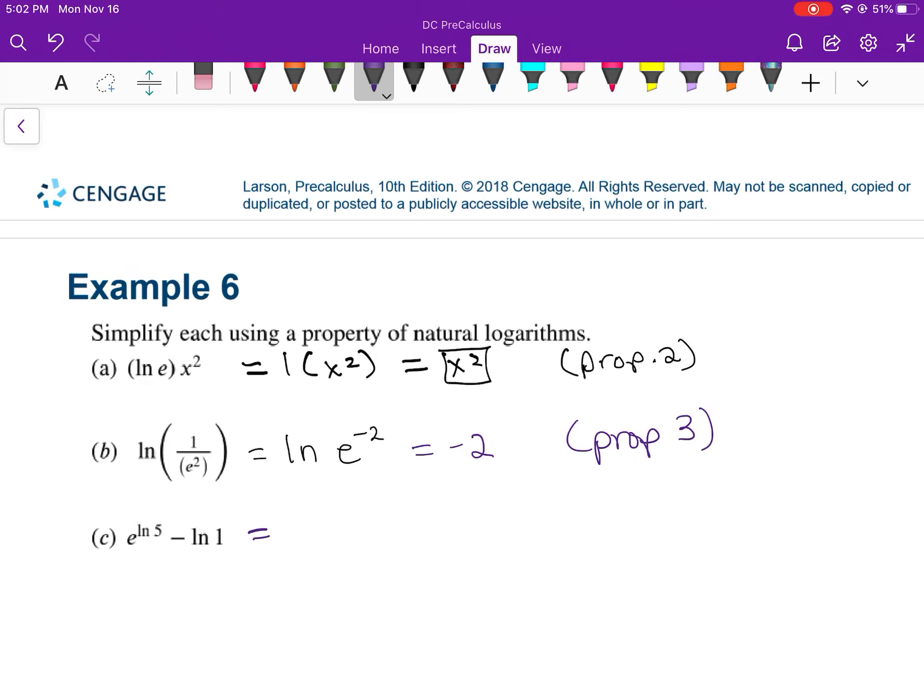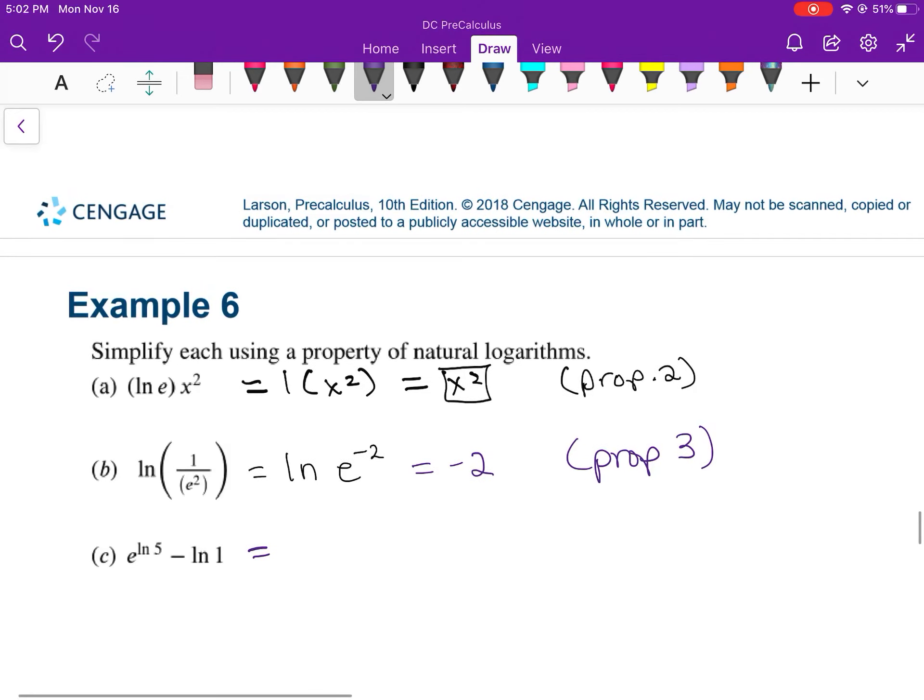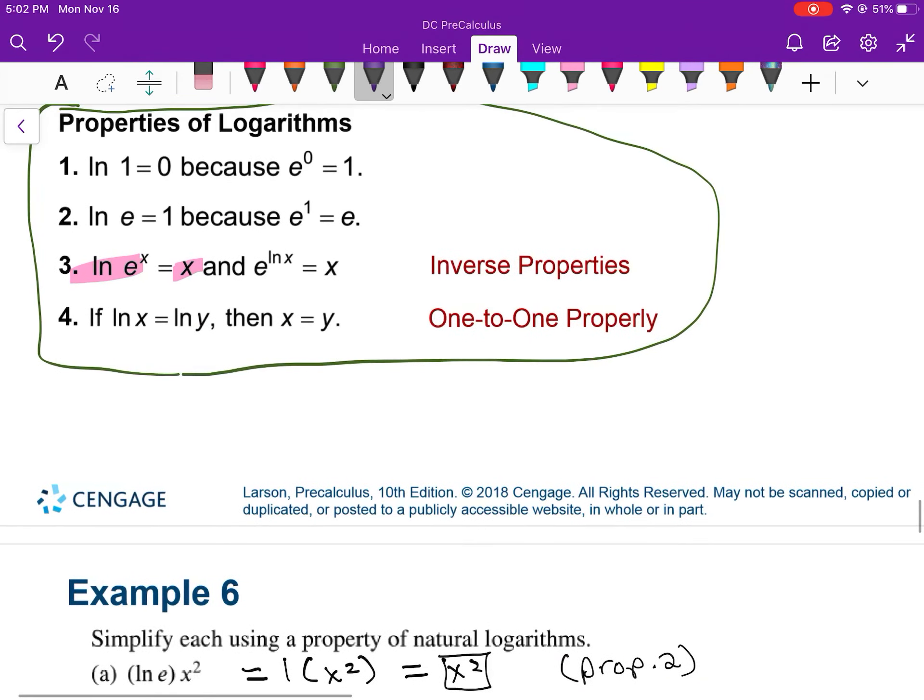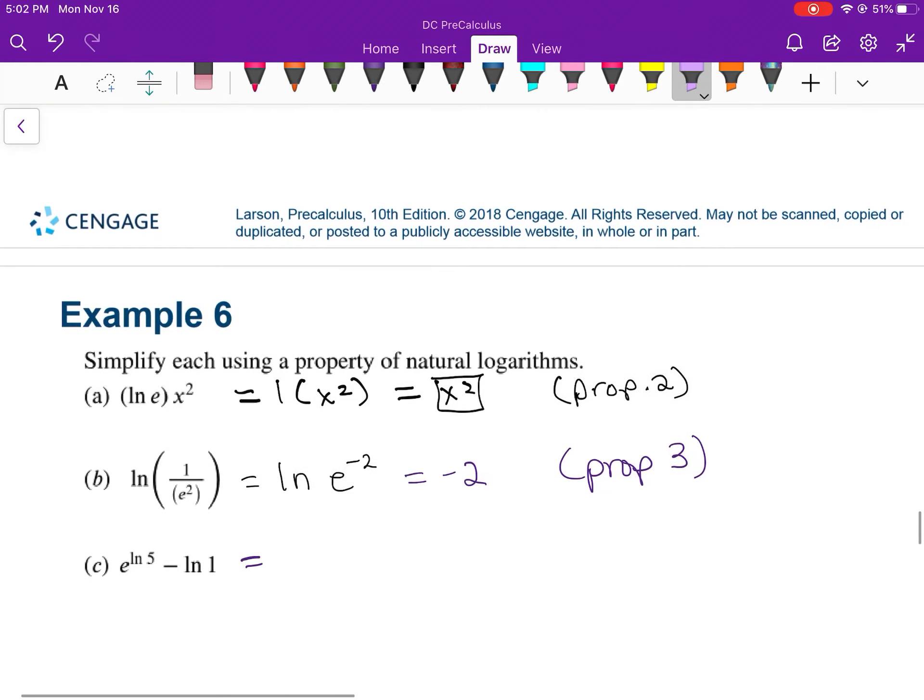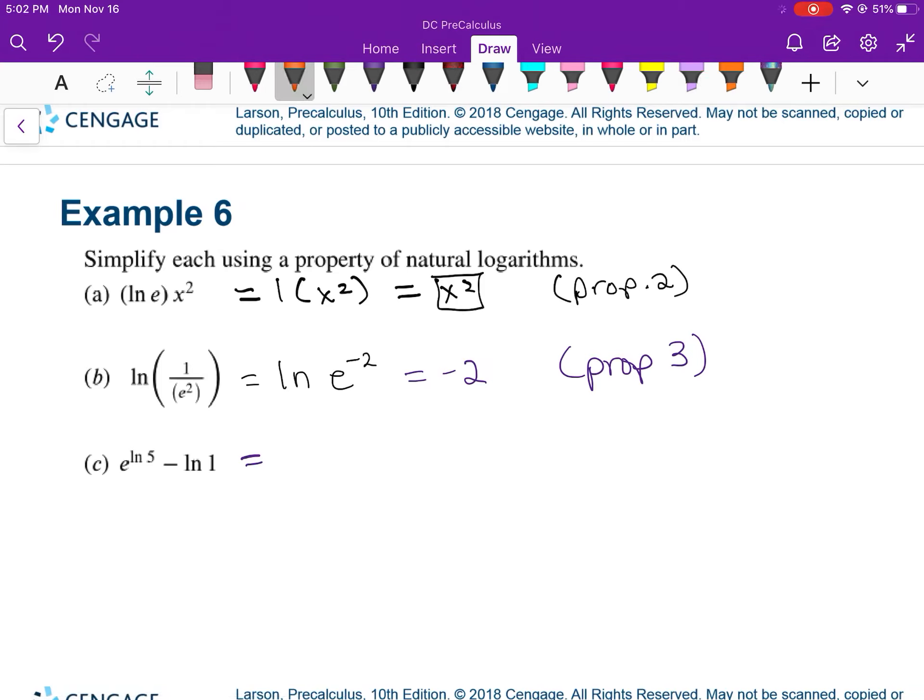For this last one, e to the ln of 5, that matches this one right here. So e to the ln of 5 is just 5. And the ln of 1 is 0, so 5 minus 0 is 5. That last one was a combination of the second part of property 3 and property 2.